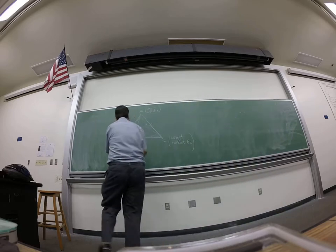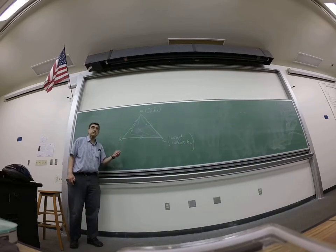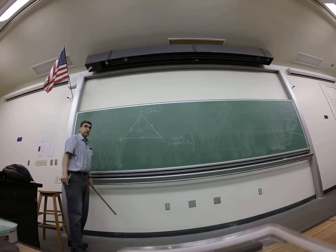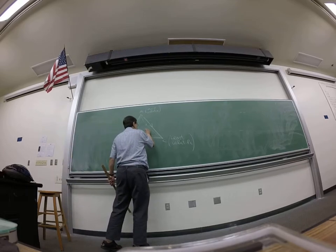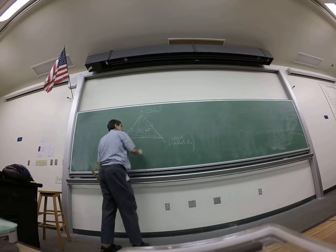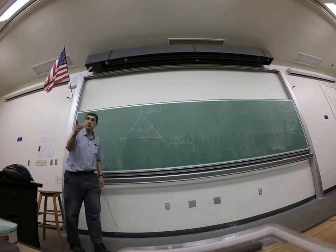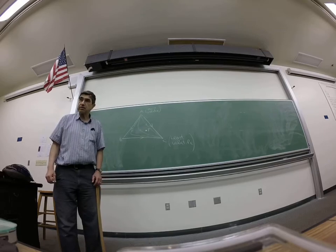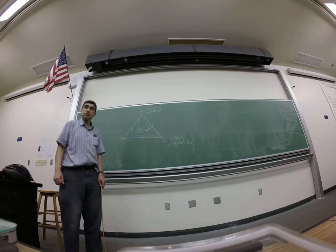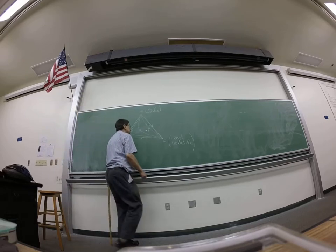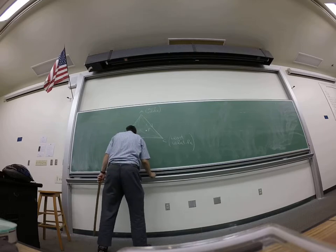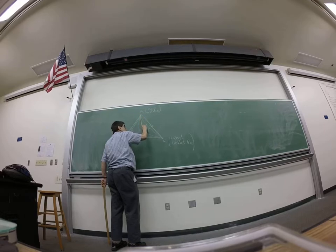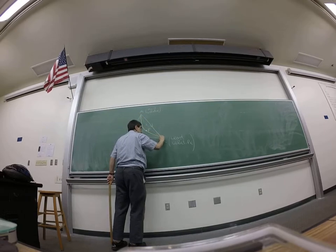So how do you find the feasible bottoms and distillate regions? What you do, let's say, you find the location of your feed. So first step: you find the location of the feed. Then we draw the residue curve through the feed.